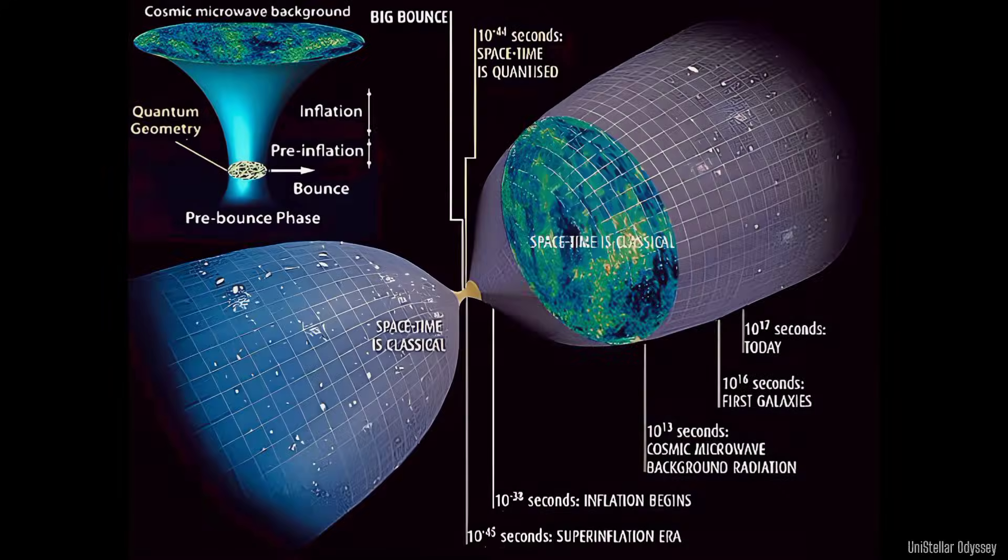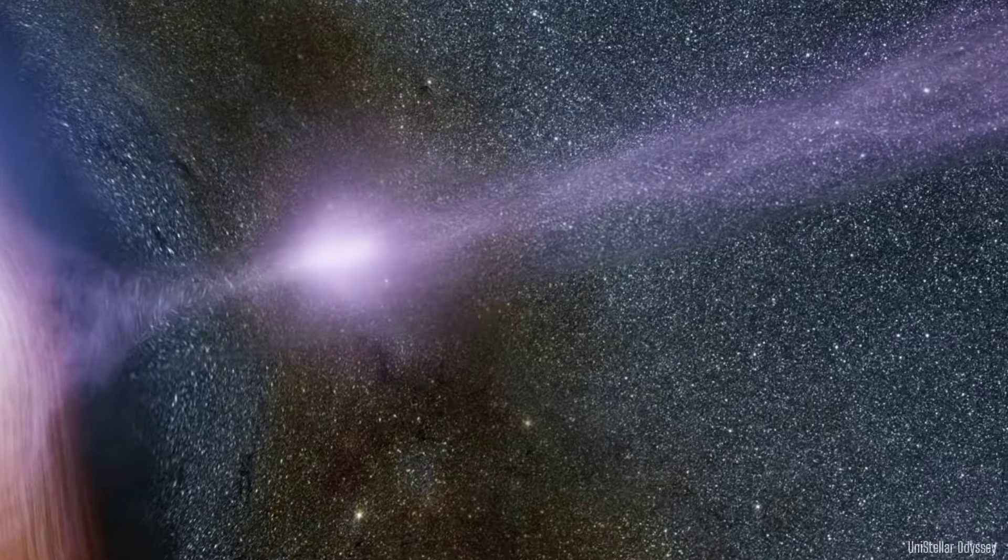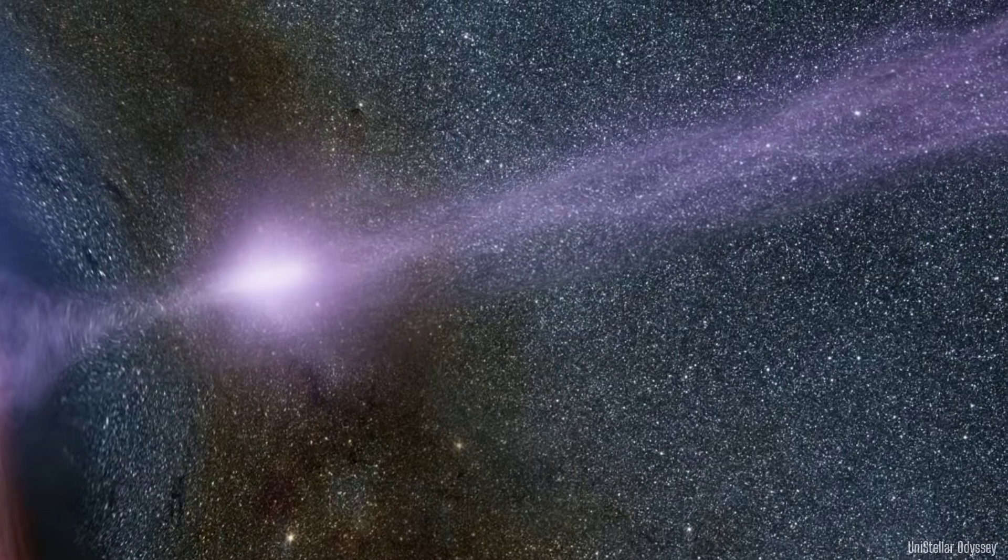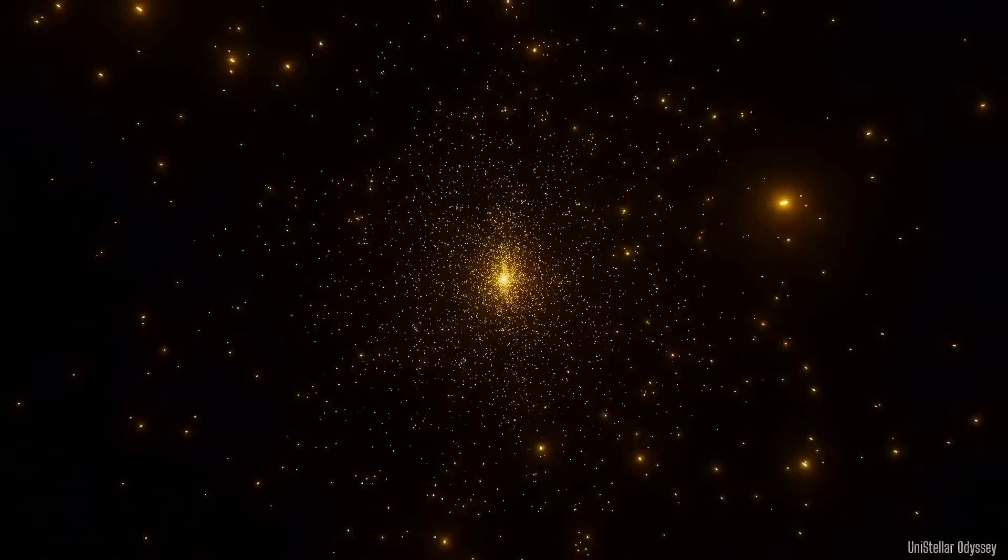In modern theories like loop quantum gravity, white holes are speculated to form when black holes bounce back after collapsing. Some even suggest the Big Bang might have been a white hole event, ejecting all matter into our universe.